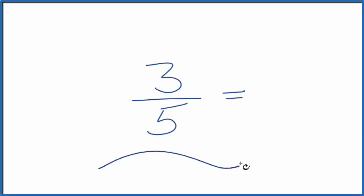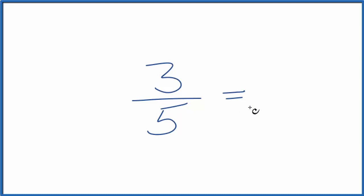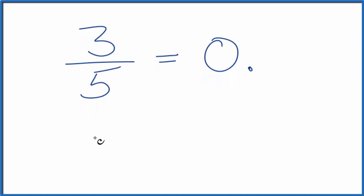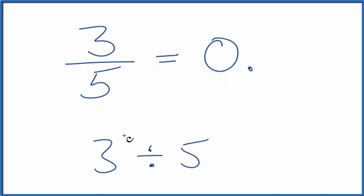Let's express three-fifths as a decimal. When we look at three-fifths, we can see that three is smaller than five, so we know that this number is going to be less than one. Another way we could write this is three divided by five — that would be the same thing. So let's divide three by five.